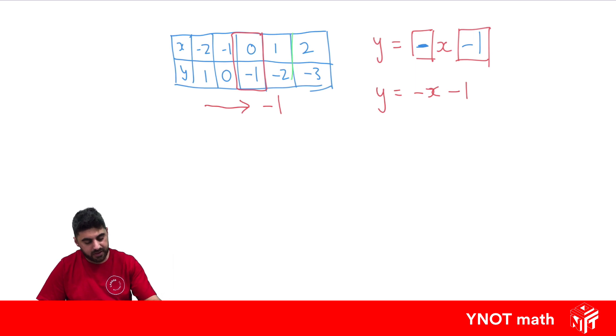You can even test it out for, let's say, this point over here. So minus x, well, x is 2, so it's minus 2, minus 1. Minus 2 minusing another one gives us minus 3, and that's exactly what we were expecting.